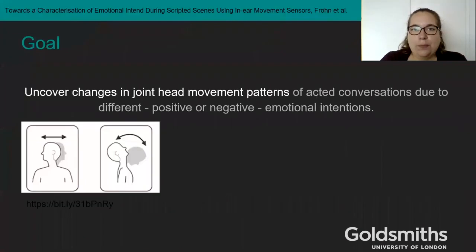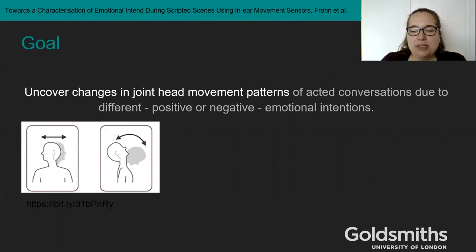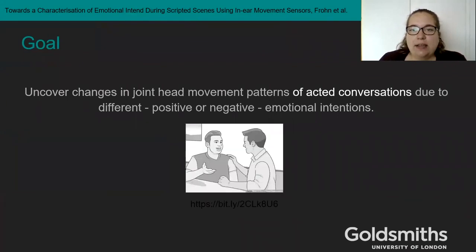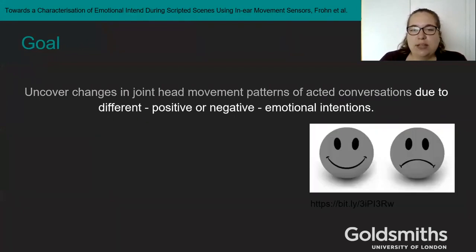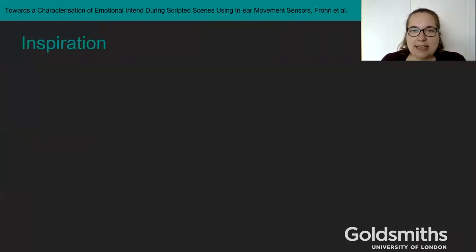We try to uncover changes in head movement coordination patterns between two participants of acted scenes that were due to the emotional intent of the speakers, and they either had a positive or negative emotional valence. Where does this idea come from?